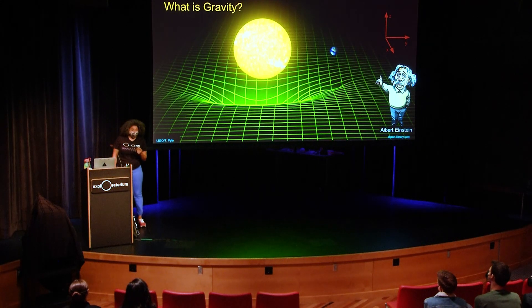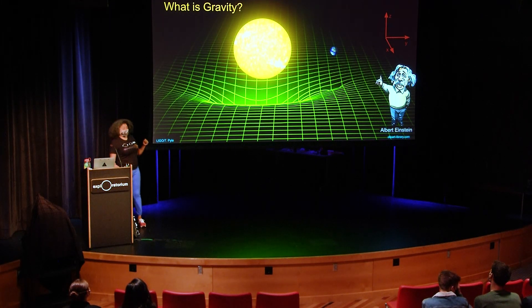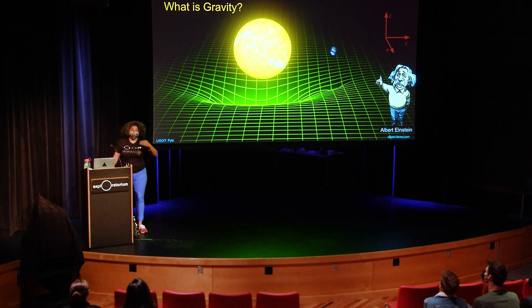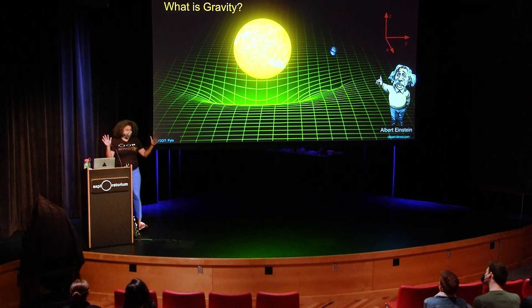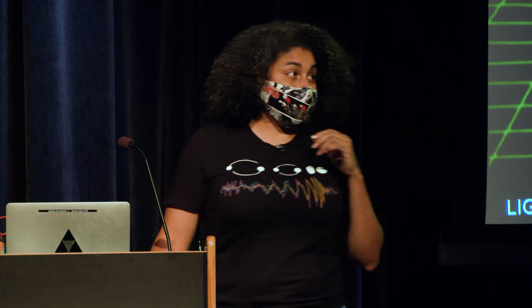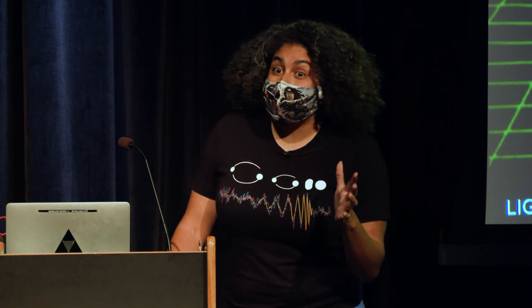When Einstein did this, he said there is no such thing as instantaneous - everything takes time to travel. Even something with no mass has to travel at some speed. There's one speed that's the fastest in the universe - does anyone know what it is? C - the speed of light. So there is this fastest speed at which anyone can travel. That was Einstein's theory, and it turned out he was able to figure out certain things we couldn't solve using Newton's theories.